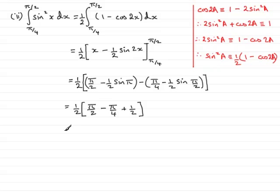So cleaning this up, we have a half multiplied by half pi minus a quarter pi, that's going to be a quarter pi or pi over 4, and then plus a half.